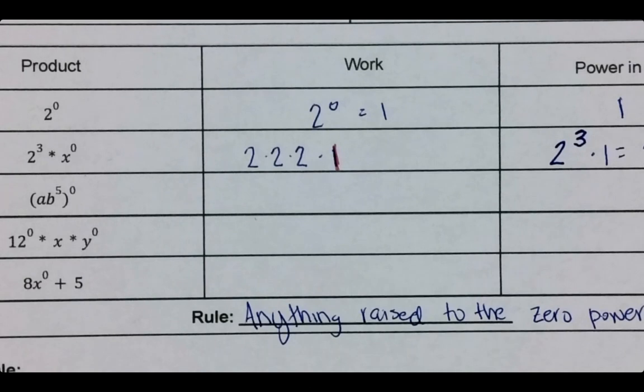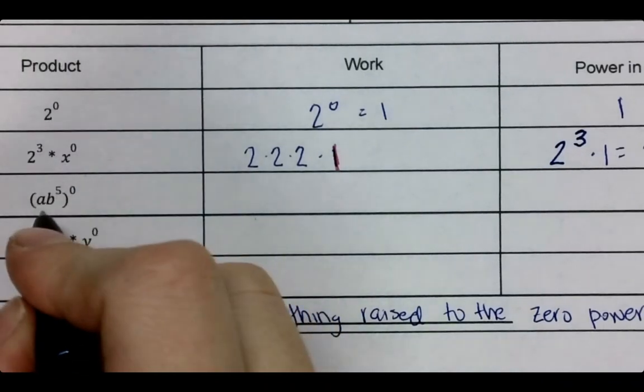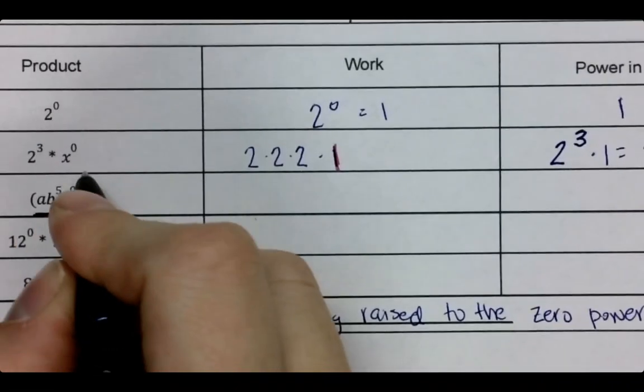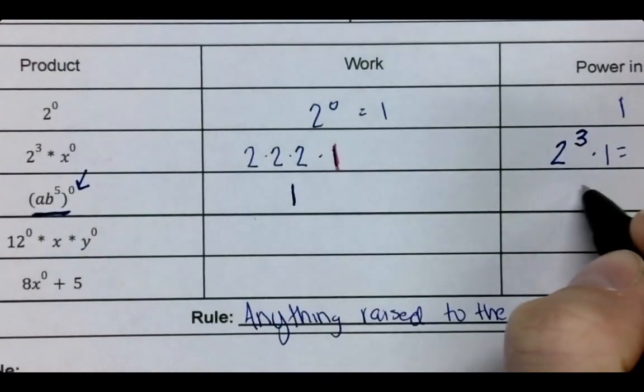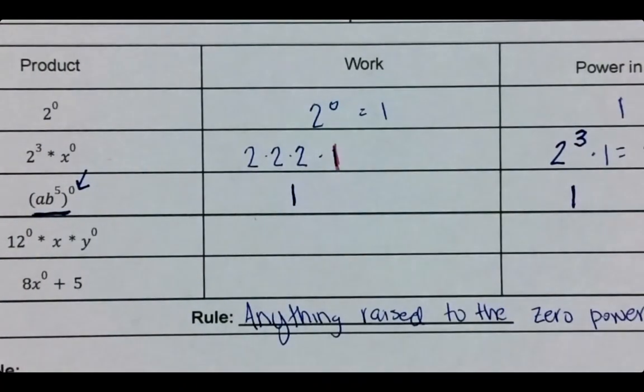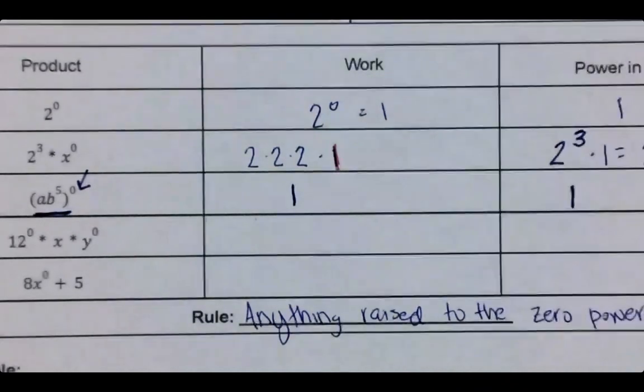For the next piece, ab to the fifth raised to the zero power. So remember at the end of last class was what we talked about. This whole thing is written zero times, which means it's just one. So our answer here is just one.